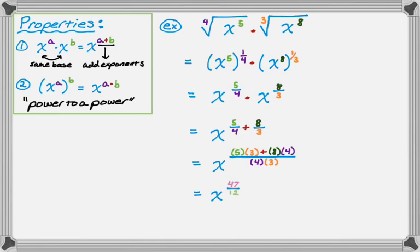And then I might, since I started with radicals, I might want to end with radicals. So you can actually go backwards. And you know the 47 is going to be the exponent, and 12 is going to be the index. So you can just kind of write it down, the 12th root of x to the 47th. All right, so that's kind of the idea. I hope you found this helpful, and good luck.